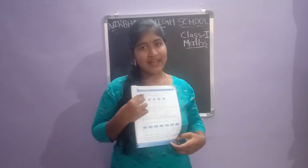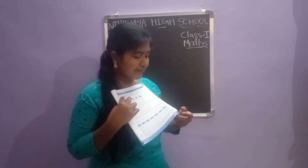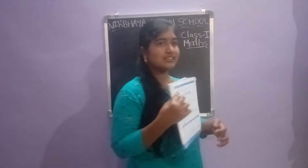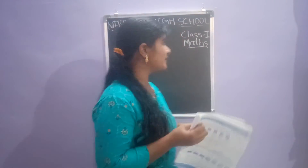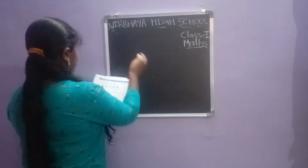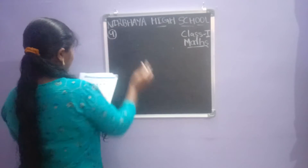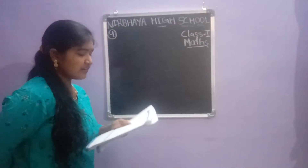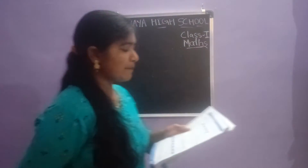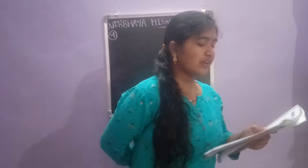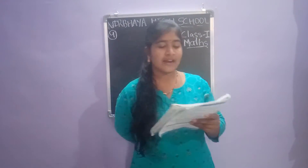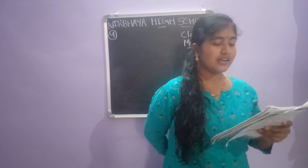Take out your math workbook, open page number 5, and all of you take out your classwork copy as well. 4th sum children today — we are on the 4th sum. Subtract 3 from 8 by writing the numbers in columns.